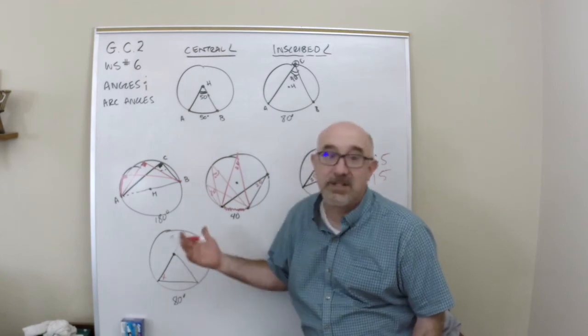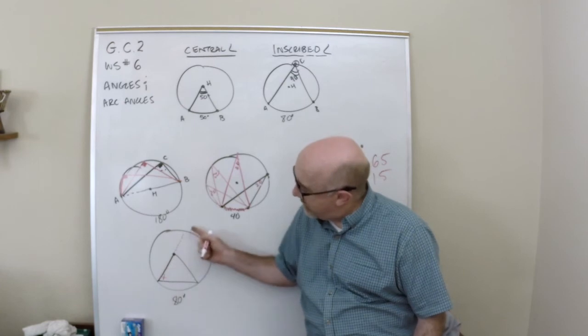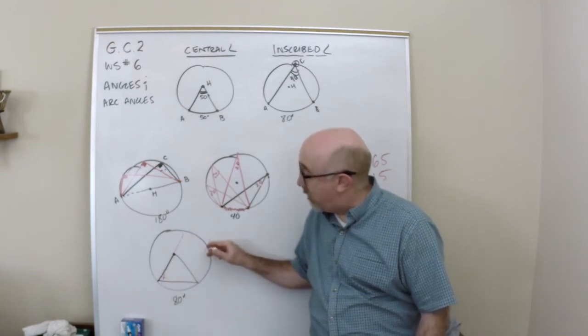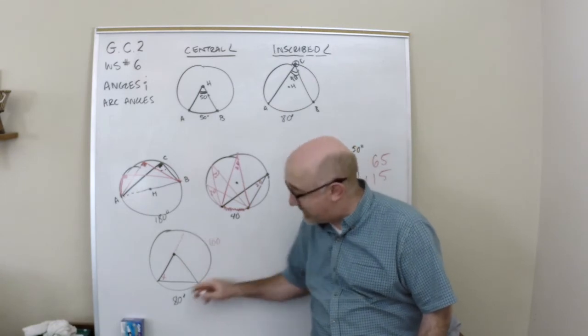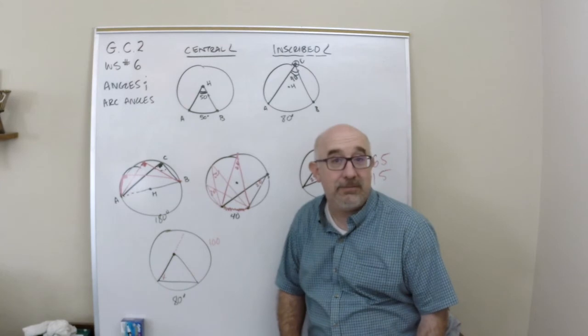So if this is the center—it doesn't look like it, it's pretty roughed in—but they've extended it so that it became inscribed, which means that it's 80 to here. There'd be 100 left over because that's a diameter. And so this is 50 down here.